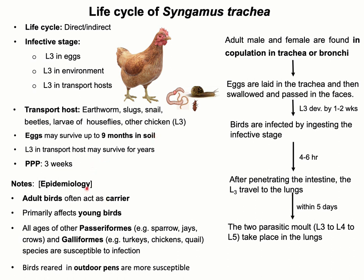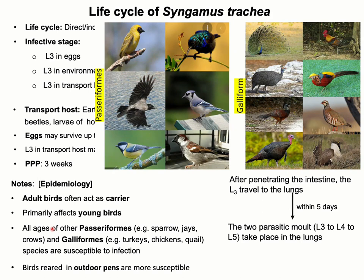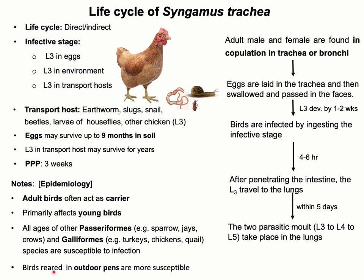Before moving on to the life cycle, some important epidemiological factors: this parasite primarily affects young birds, while adults act as carriers. Birds of the orders Passeriformes and Galliformes of all ages are susceptible to this parasitic infection. Birds reared in outdoor pens are also highly susceptible.